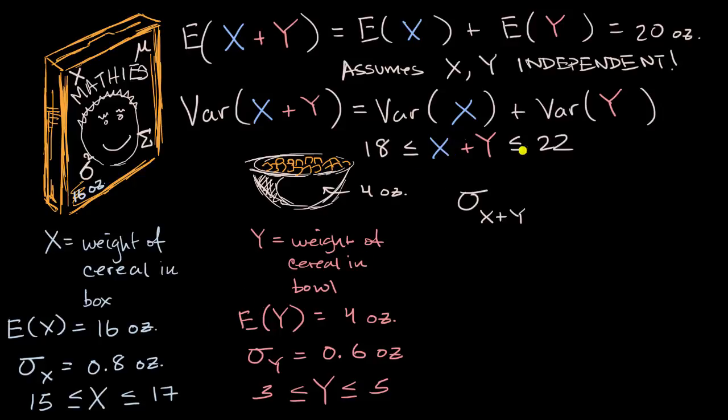And so notice, now the variation for the sum is larger. We have a range that this thing can take on now of four, while the range for each of these was just two.